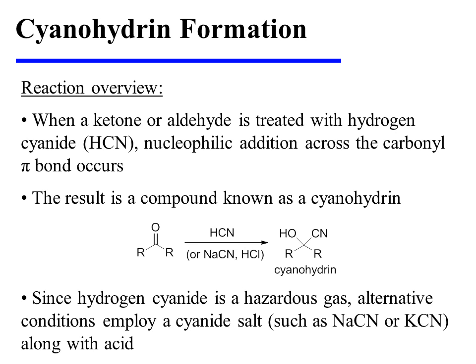When a ketone or aldehyde is treated with hydrogen cyanide, nucleophilic addition across the carbonyl pi bond occurs. The result is a compound known as a cyanohydrin. Since hydrogen cyanide is a hazardous gas, alternative conditions employ a cyanide salt, such as sodium cyanide or potassium cyanide, along with acid.